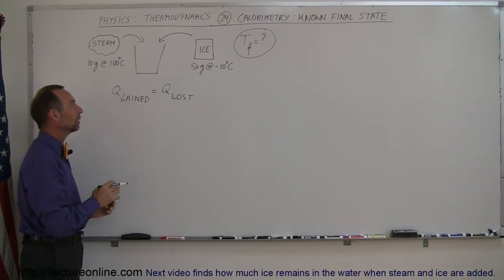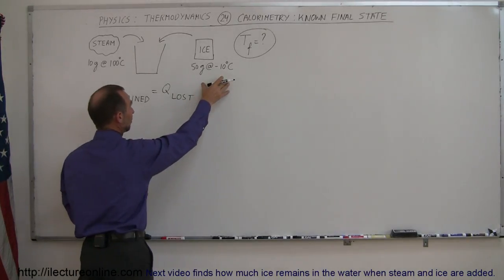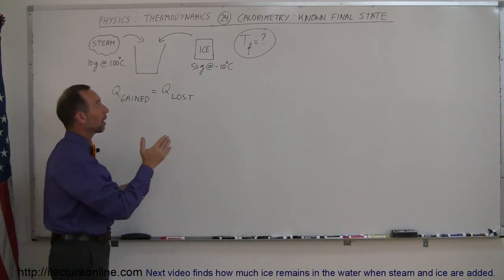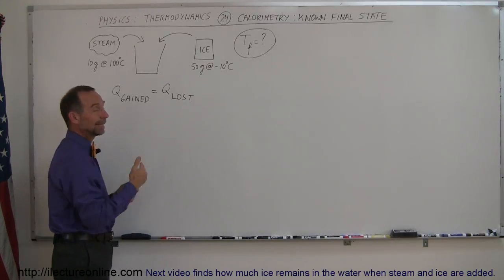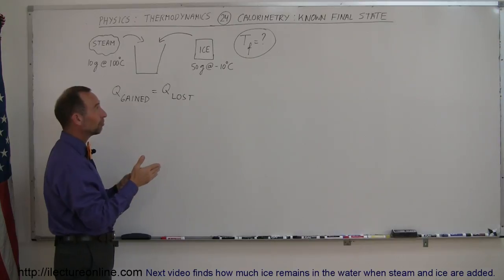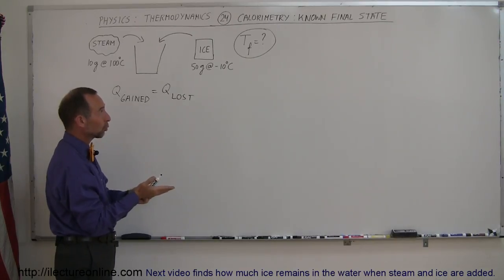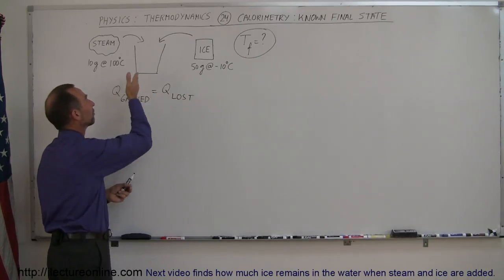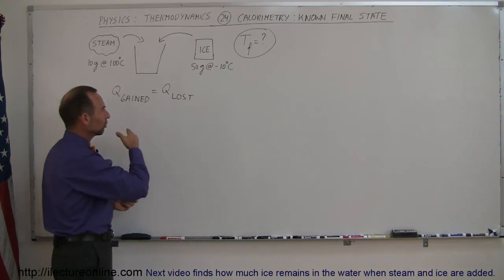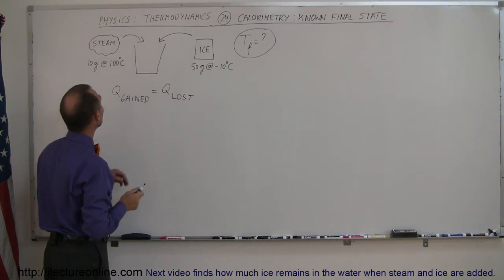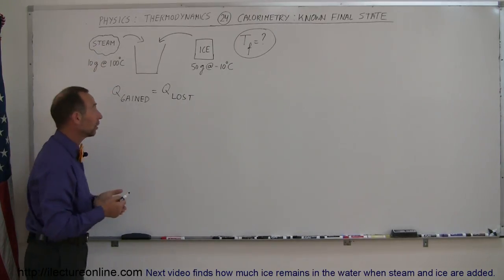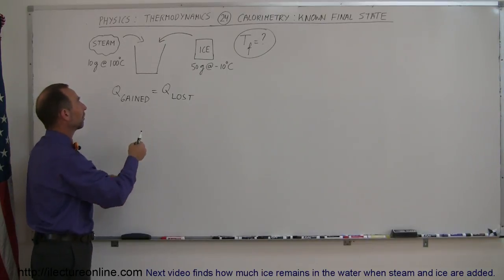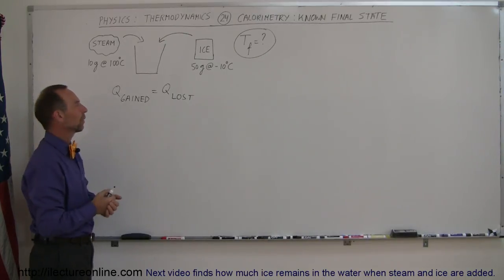What is gaining heat? Well, the ice is probably gaining heat. First, it needs to be brought from minus 10 degrees centigrade to 0 degrees centigrade, then it needs to be melted, and then the melted water needs to be brought up to whatever the final temperature is. So there are three terms on the left side. What is losing heat? The steam has to condense, and then the condensed steam at 100 degrees centigrade — now hot water — will then cool down. So there are two terms on the right side.